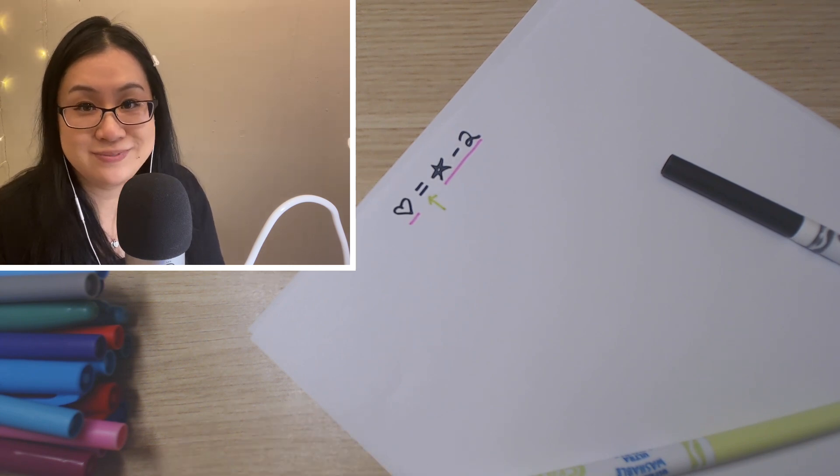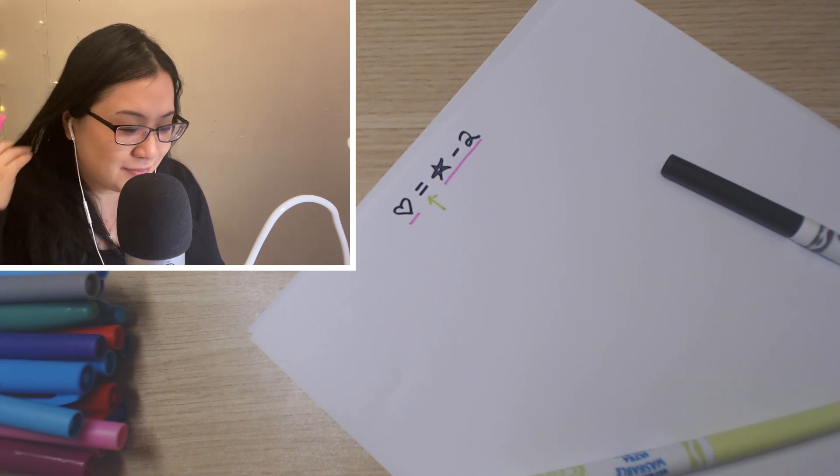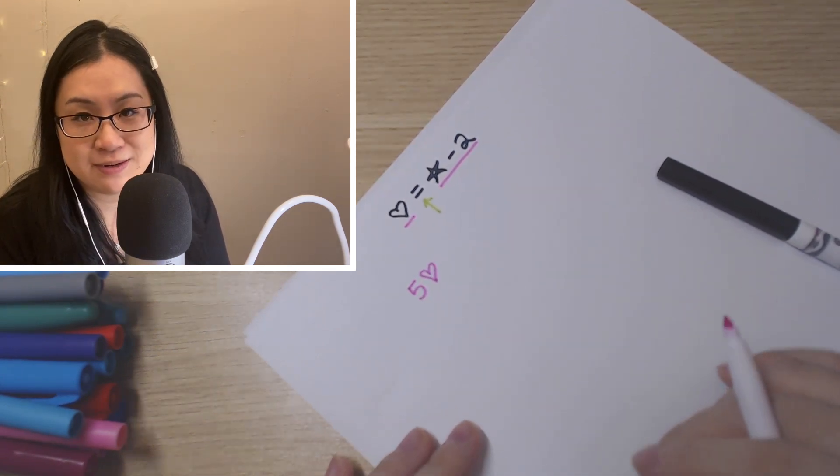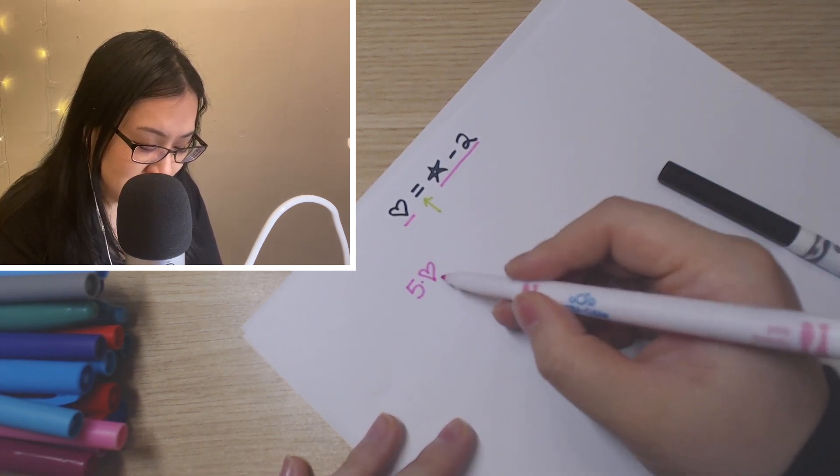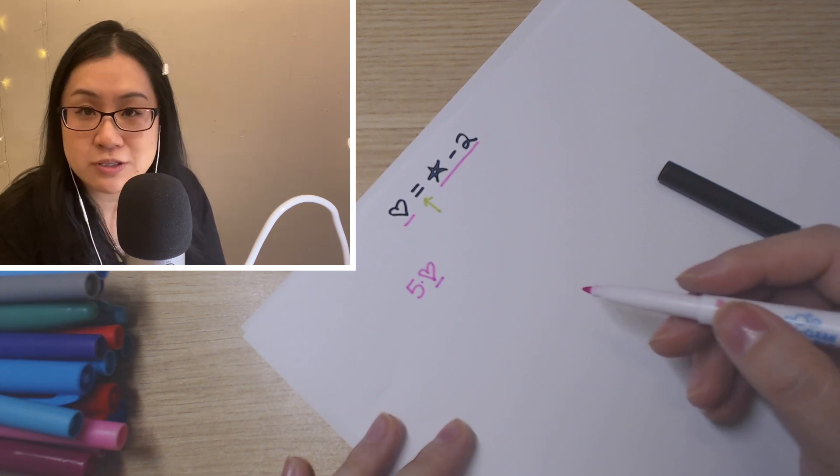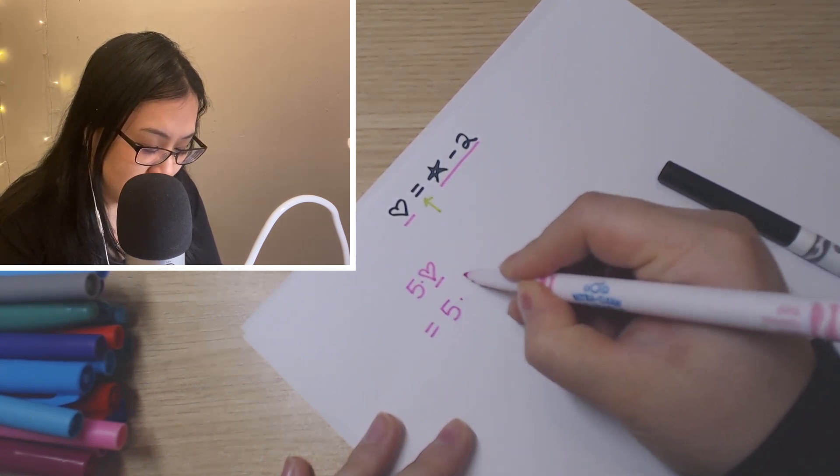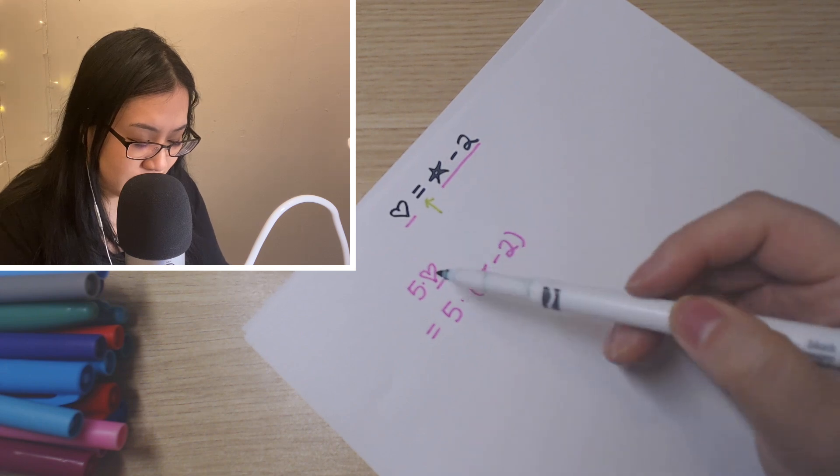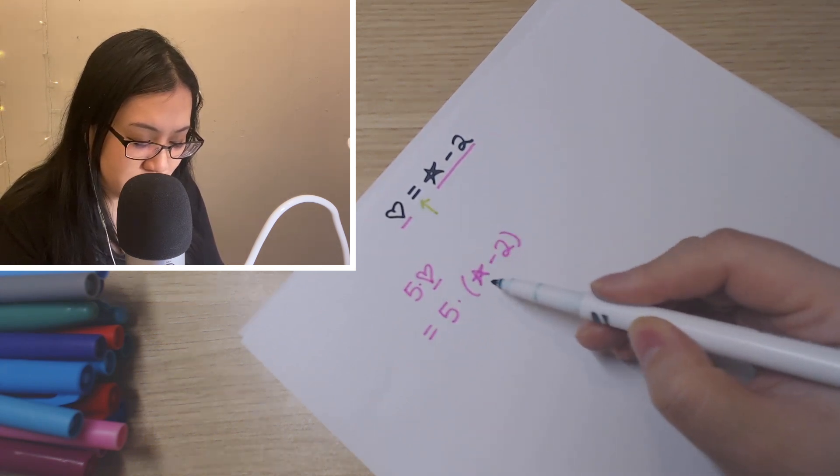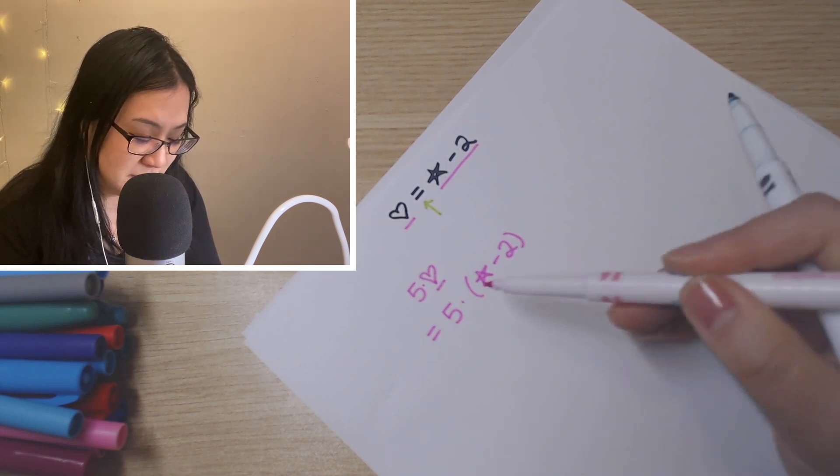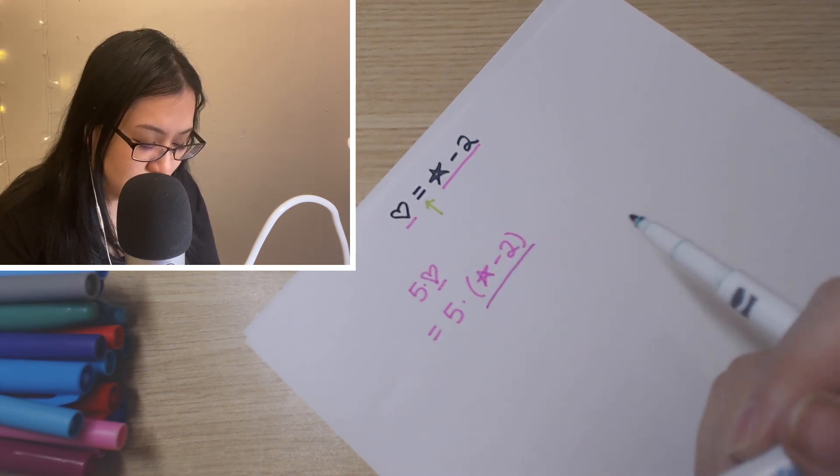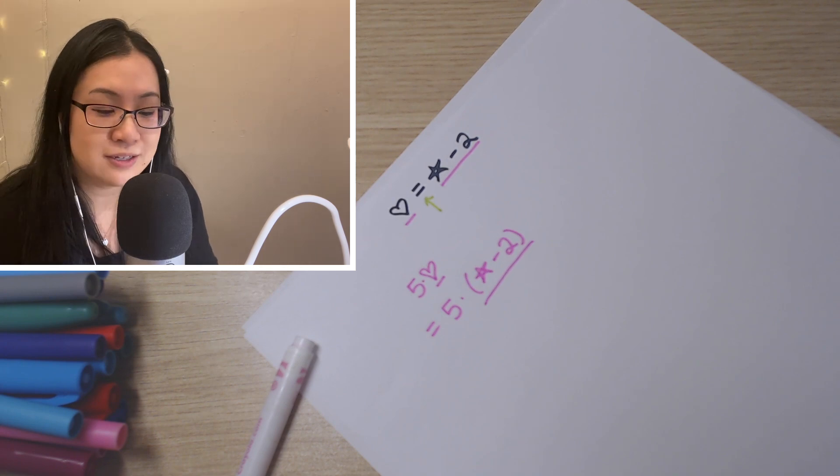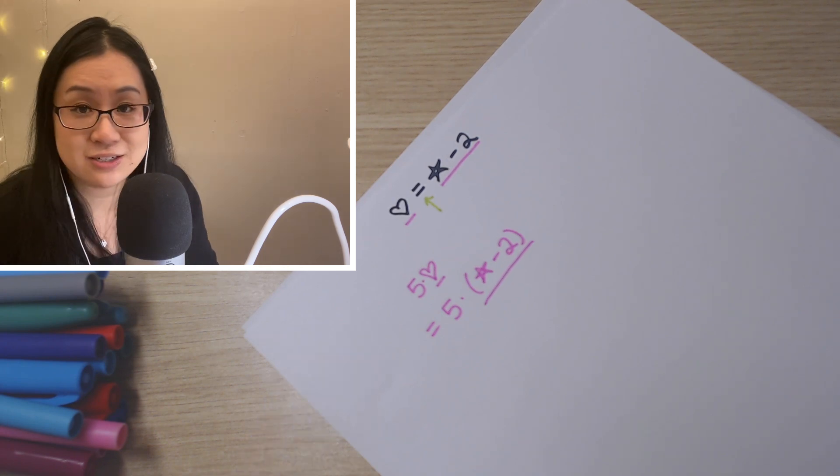Because of this equal sign, it literally tells me that heart is equivalent or equal to star minus two. I'm repeating myself, but it's actually very important. So heart and star minus two are interchangeable now, and that's what substitution is about. It's as simple as that.